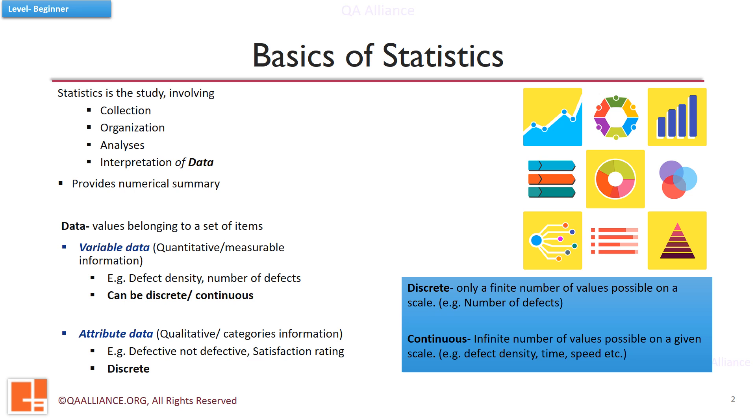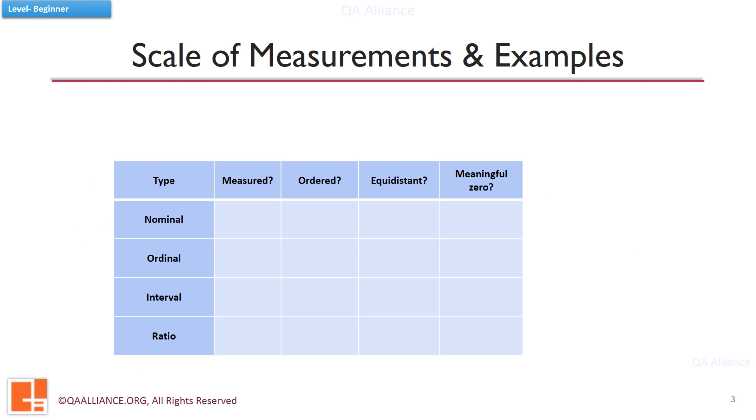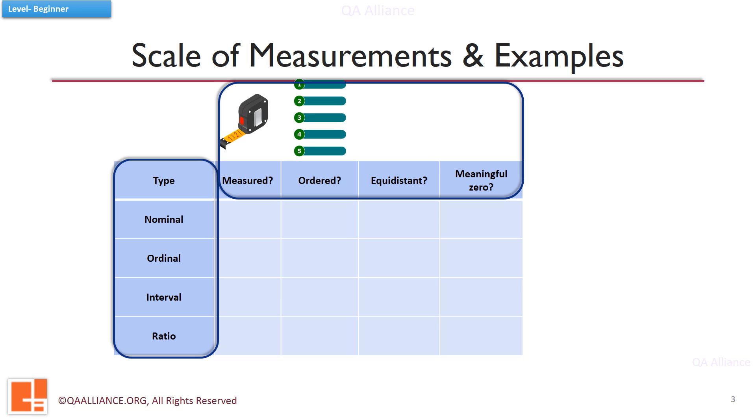Now we understand the concept of scale of measurements. There are four types of scales. It is important to understand these scales because they impact the type of statistical analysis that can be performed on the data. We can classify these scales with the help of four characteristics: whether the data can be measured, whether can be ordered, whether the data values are equidistant, and whether the data values may have a meaningful zero.